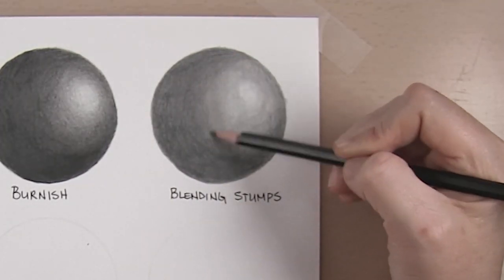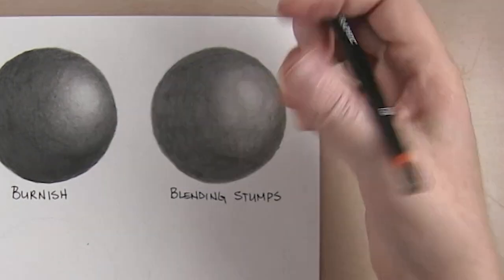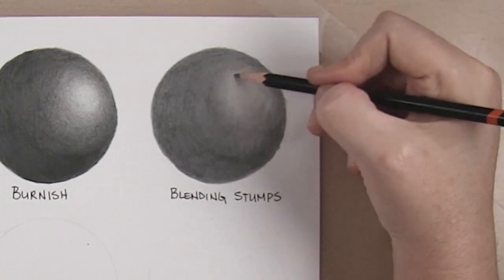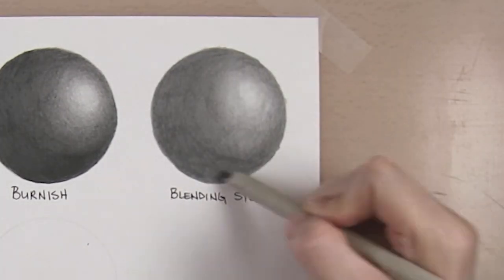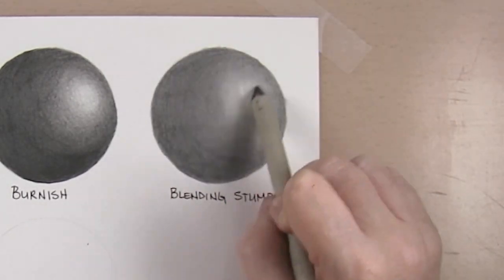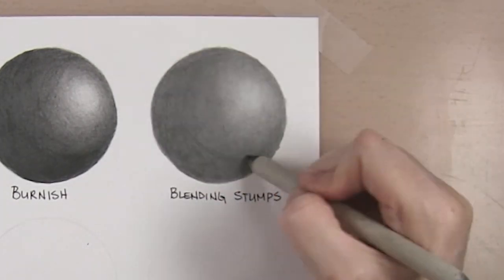This is probably my favorite tool to use with graphite. I also like to use these to draw and shade lighter areas with residual graphite left on the stump. Unfortunately it can flatten the tooth of the paper so care should be taken to not apply too much pressure. It can also create a shine depending upon the amount of graphite in the area making adding additional layers difficult.